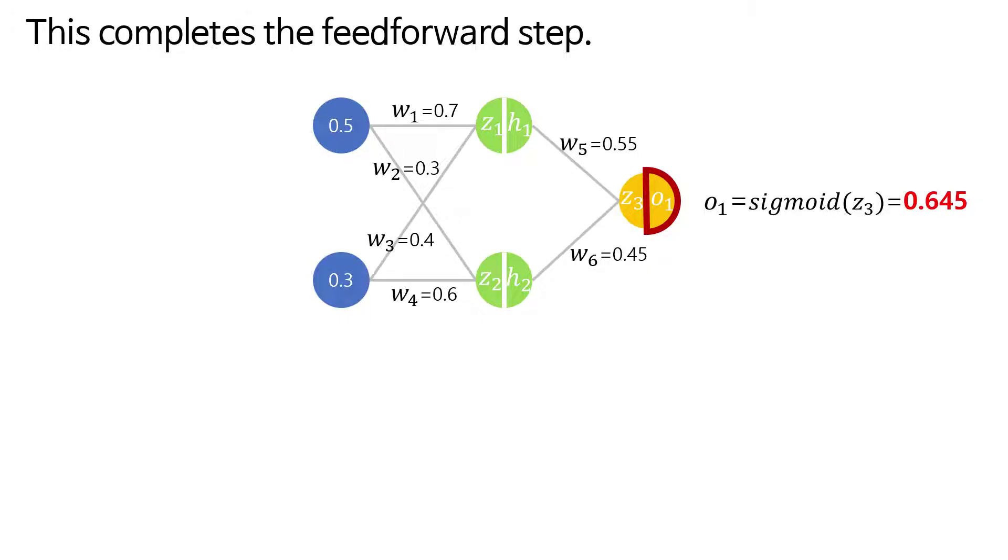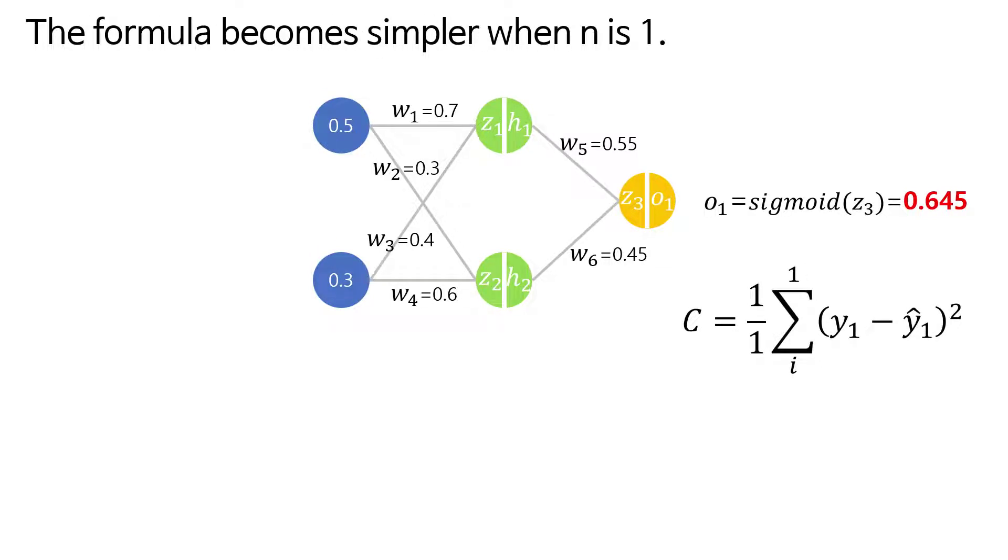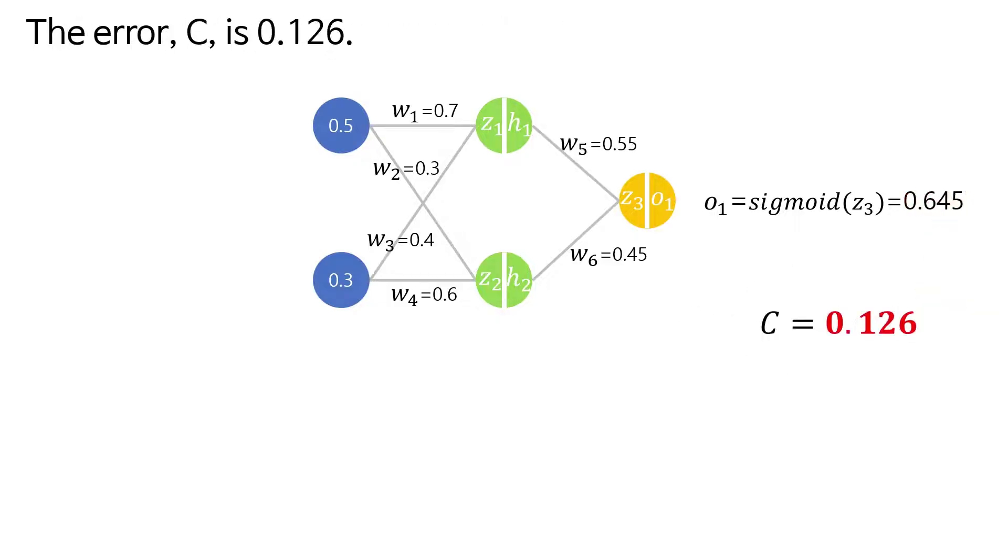The next step is calculating the loss. Since we're using MSE, we just need to apply the formula. As there's only one output neuron, the formula becomes simpler. If we assume an output value of 0.645 and a real value of 1, the error c is 0.126.